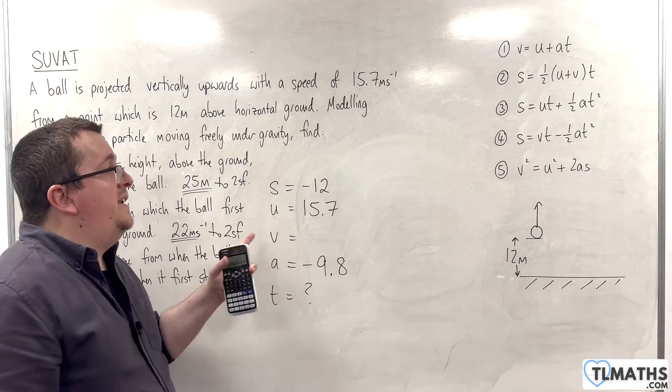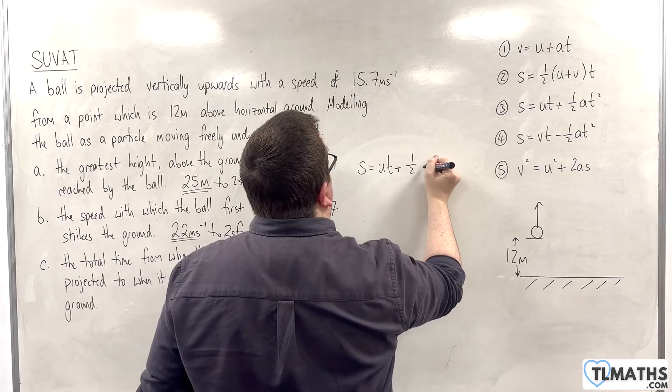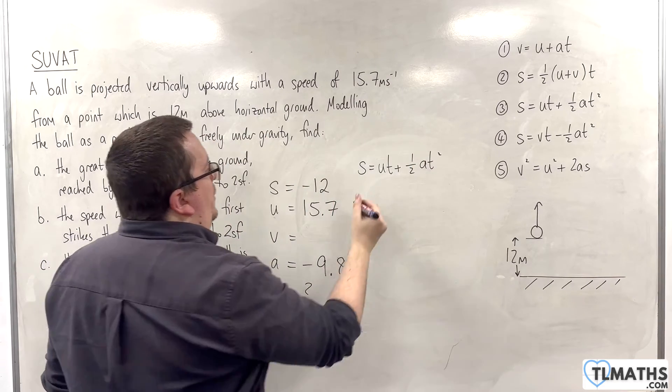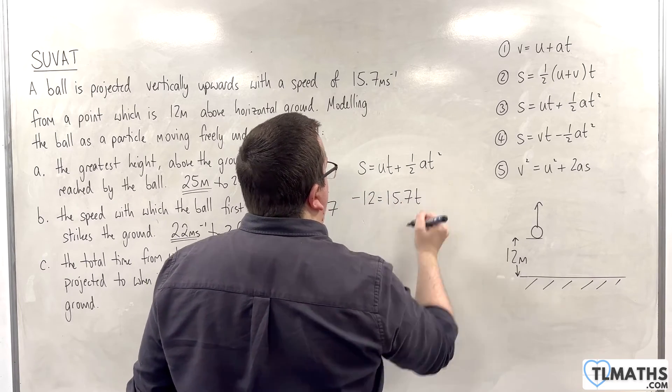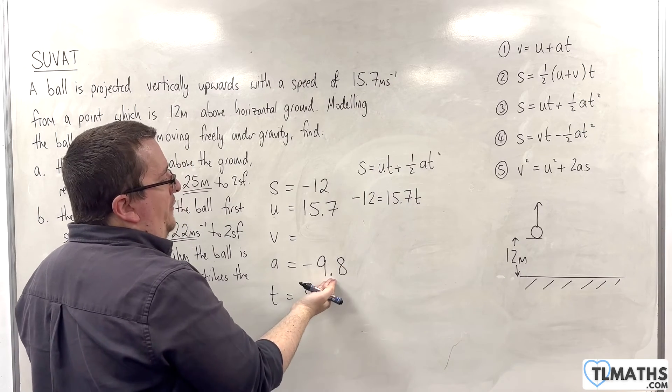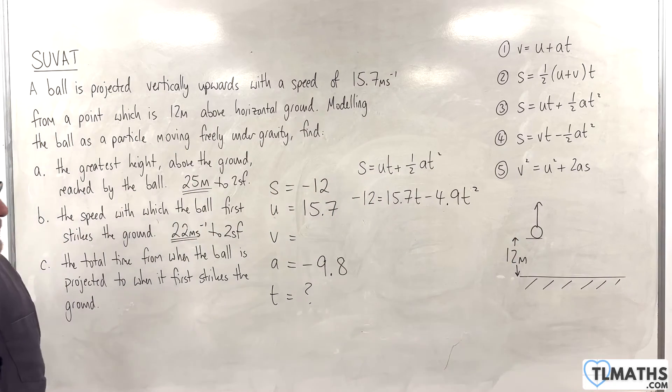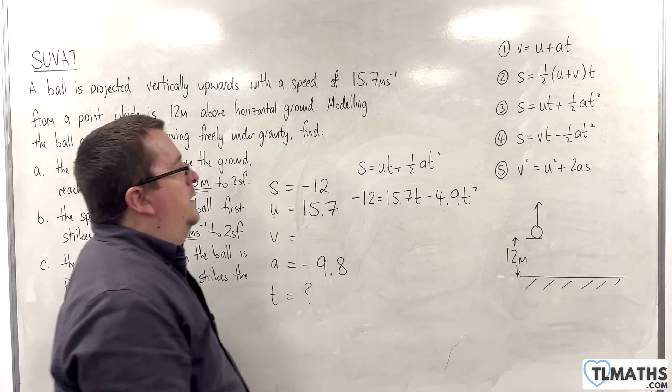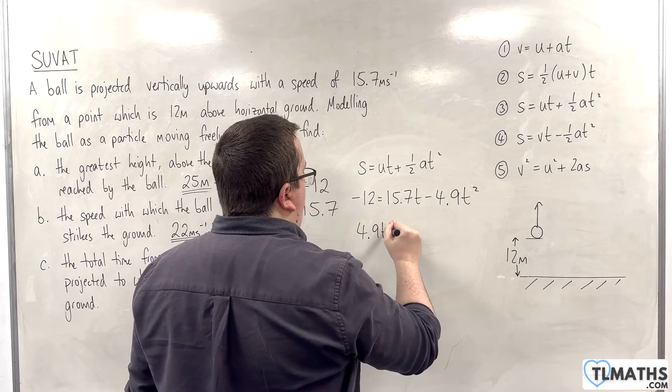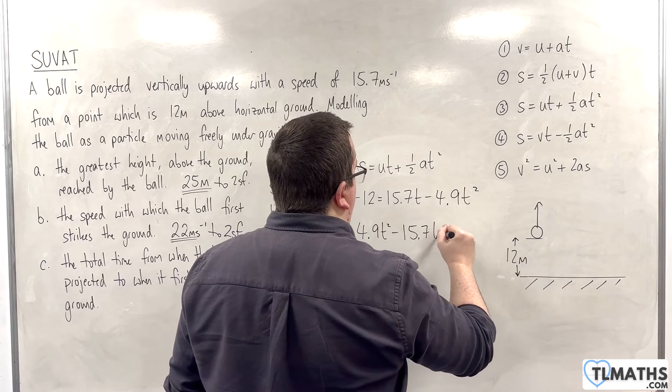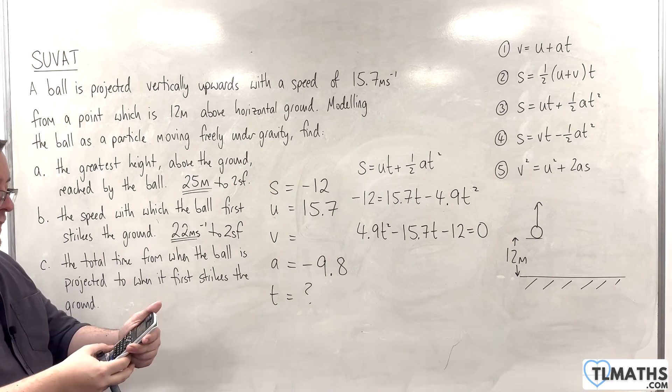So, I want the equation that doesn't have V, which is number 3. So, S equals UT plus half AT squared. So, minus 12 equals 15.7 times T, plus half times minus 9.8, so minus 4.9 T squared. Let's rearrange that, get everything onto one side. So, 4.9 T squared, take away 15.7 T, take away 12 equals 0. And now, I'm going to use my calculator to solve the quadratic.